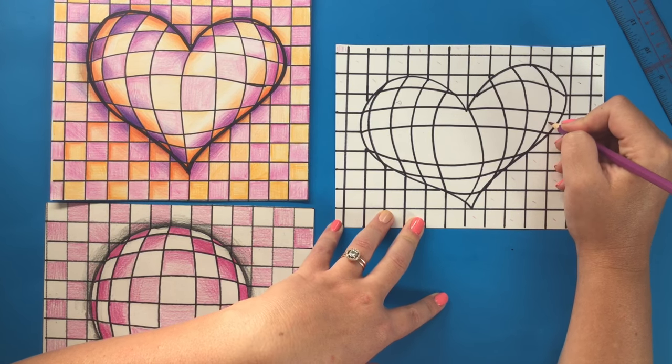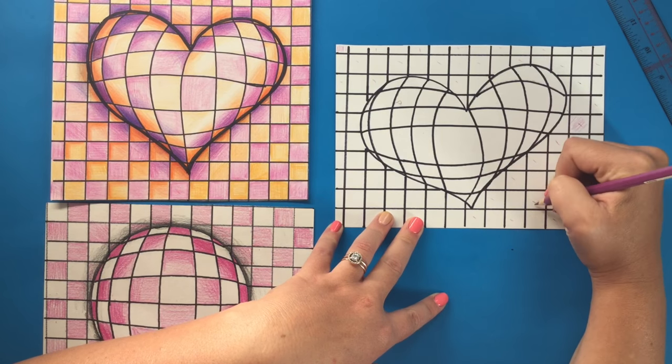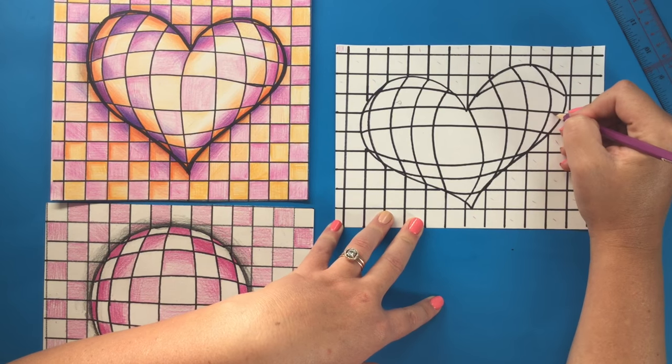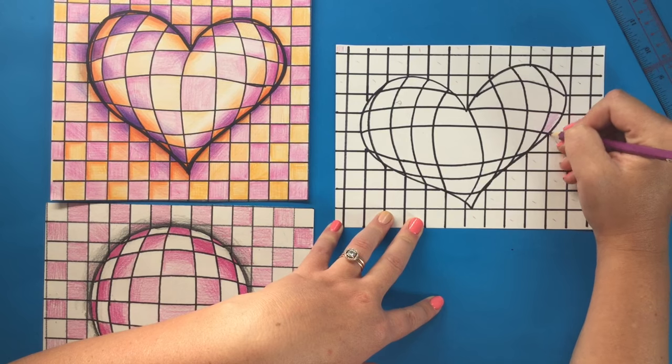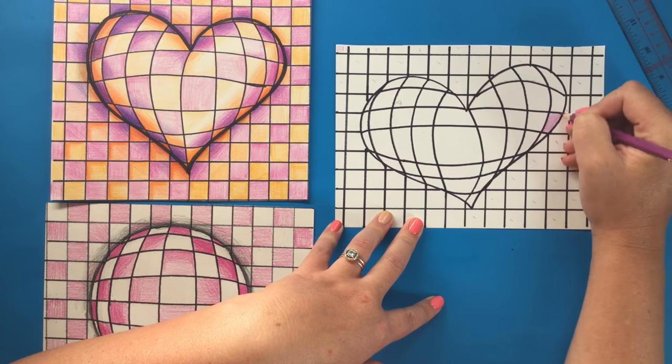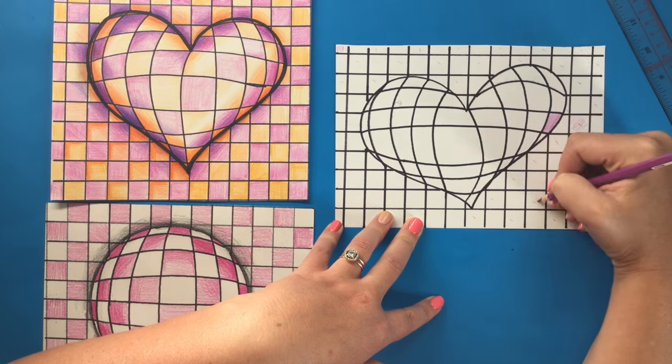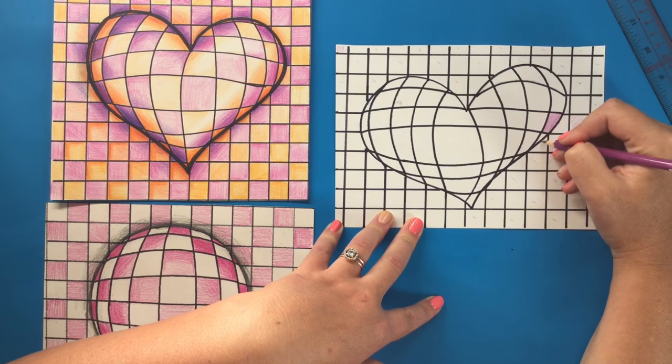Then this one right here should be colored. And this is an extension of this column right here. So I automatically know that this one is supposed to be colored in because it fits right here into this column.